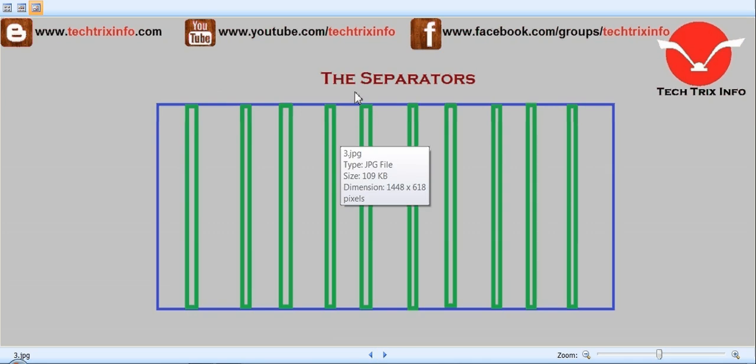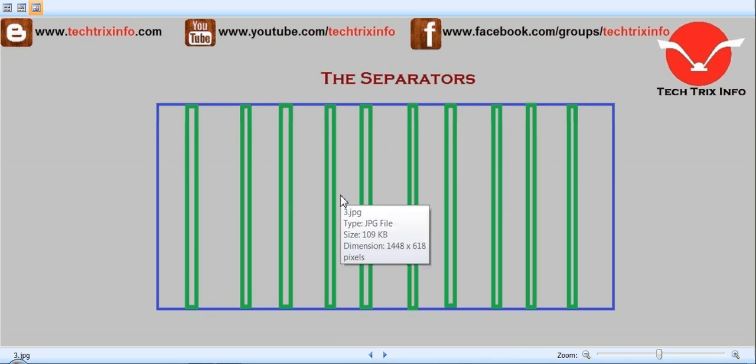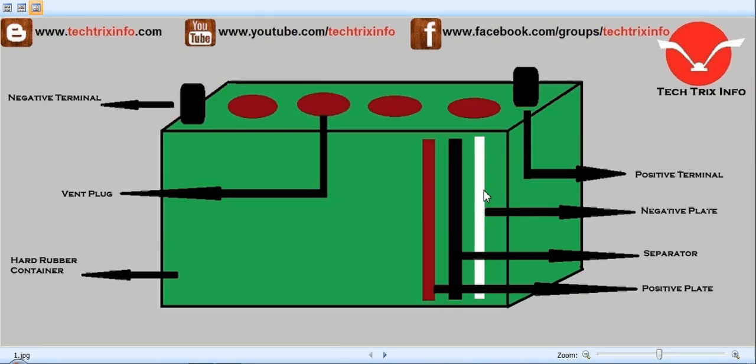We have a separator. This is how a separator actually looks like. The purpose of the separator is preventing the positive and the negative plate from touching each other. You can see the white is a negative plate